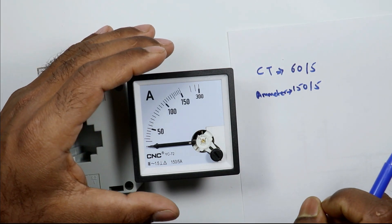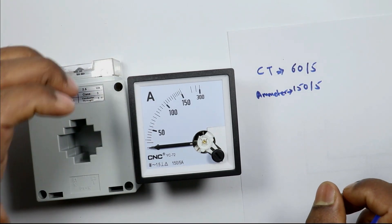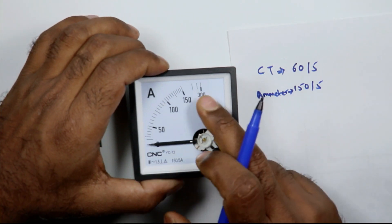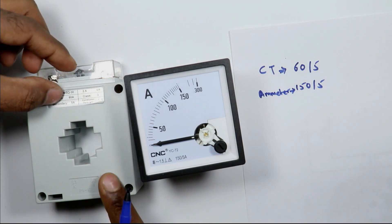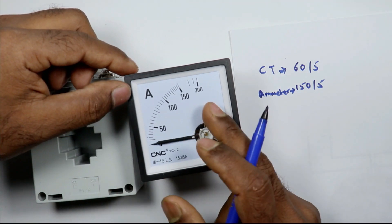If I want to connect this ammeter with this CT, then the parameter of the scale of ammeter needs to be changed. If you have the suitable ammeter which can be connected with CT, then you can change the scaling of this ammeter.